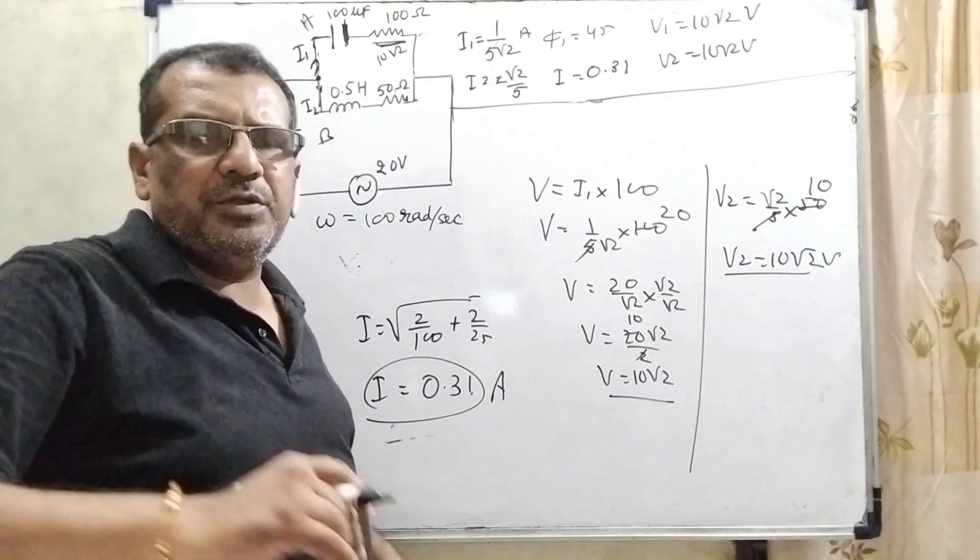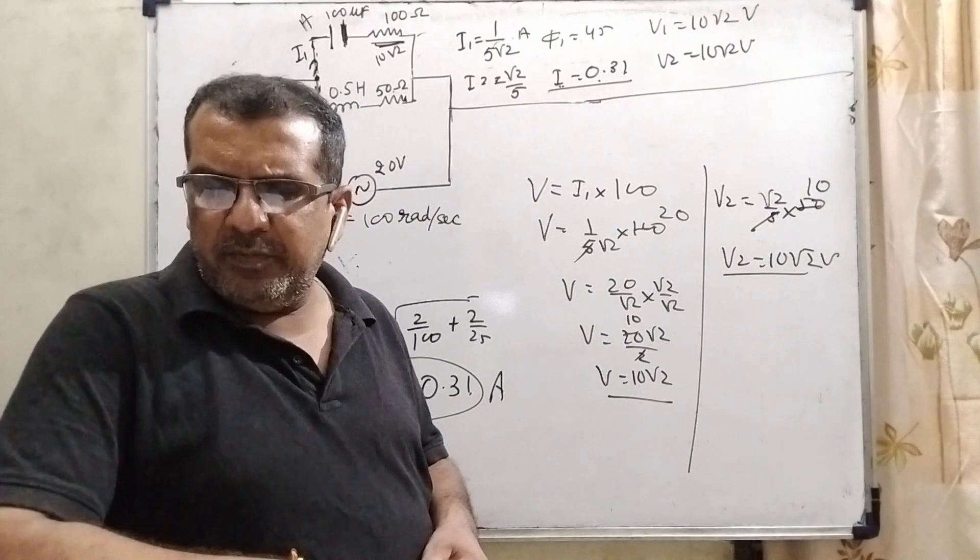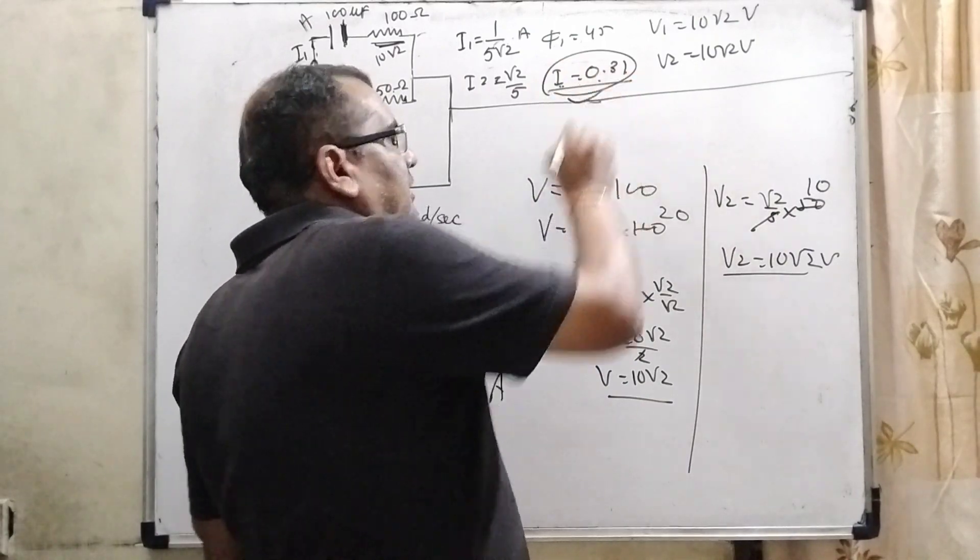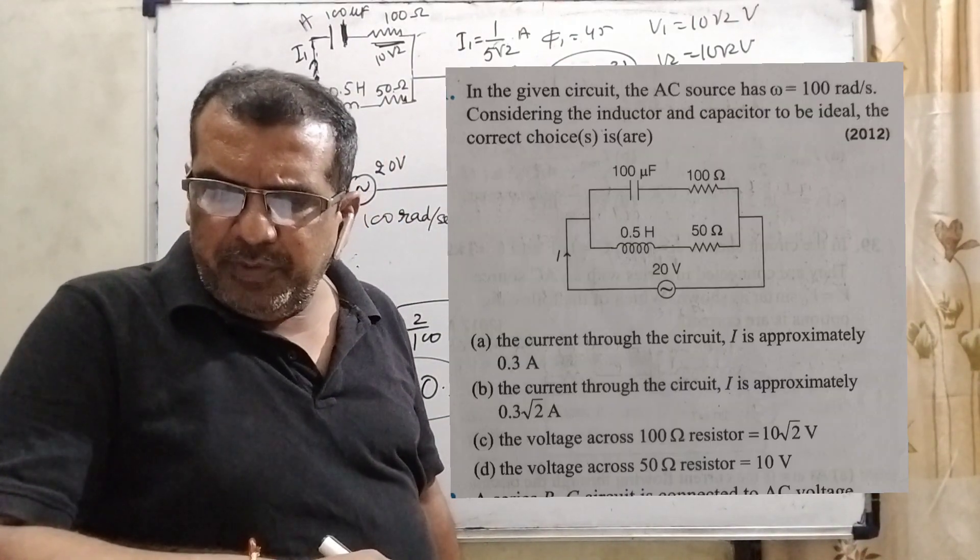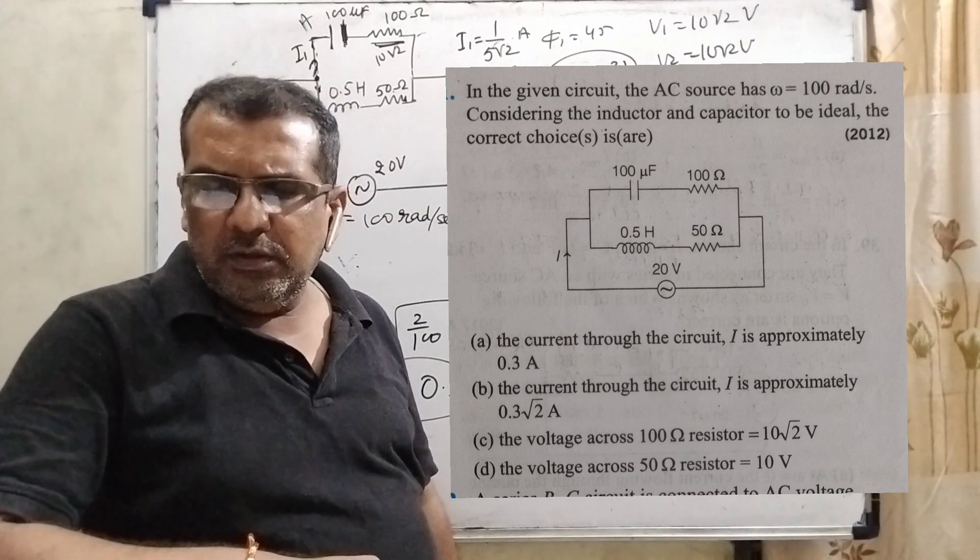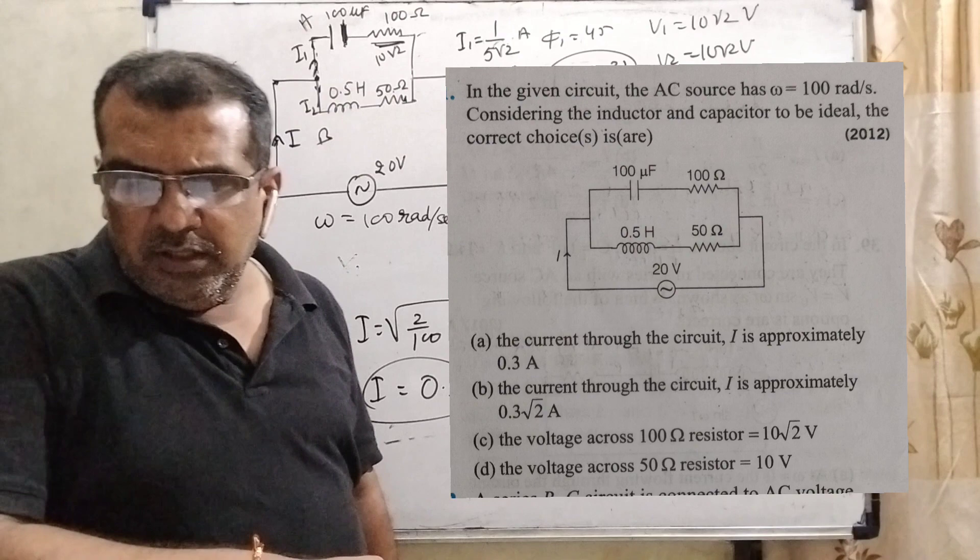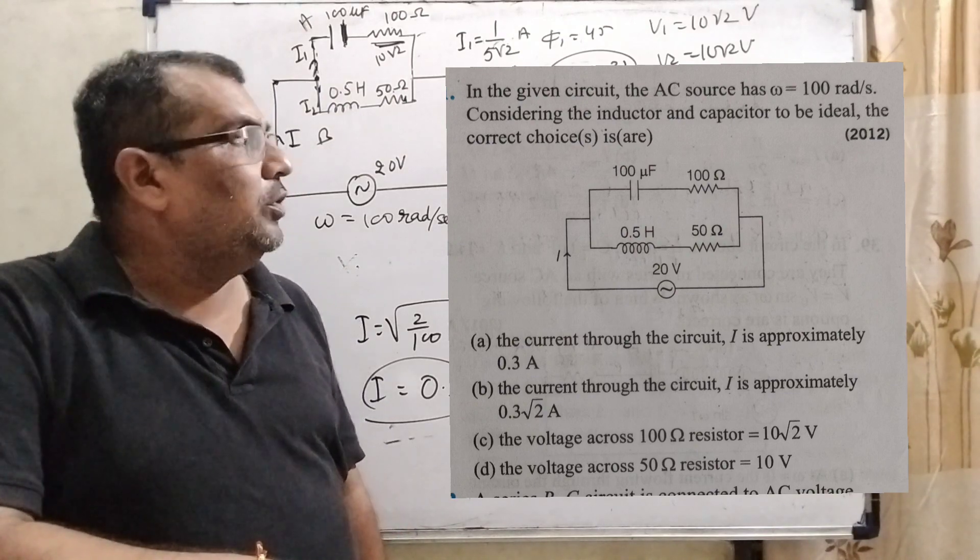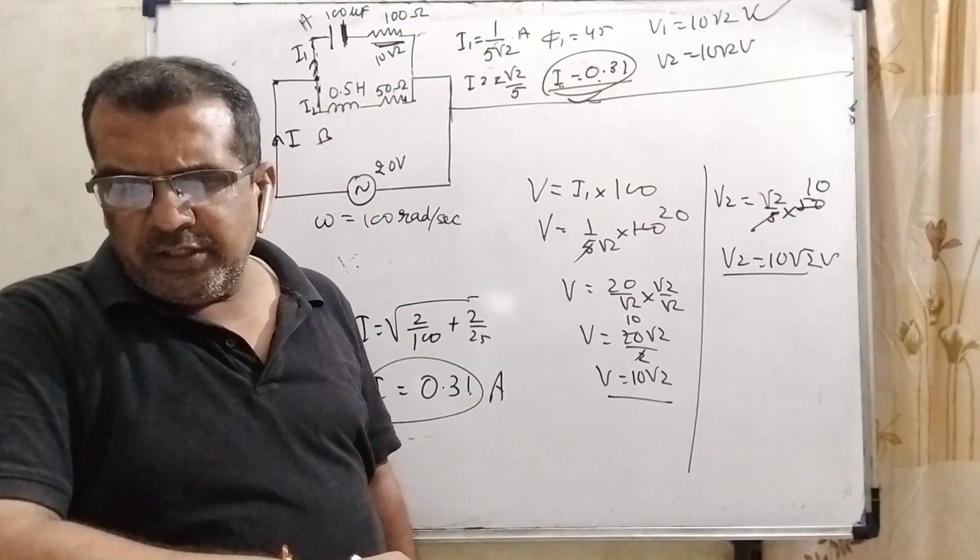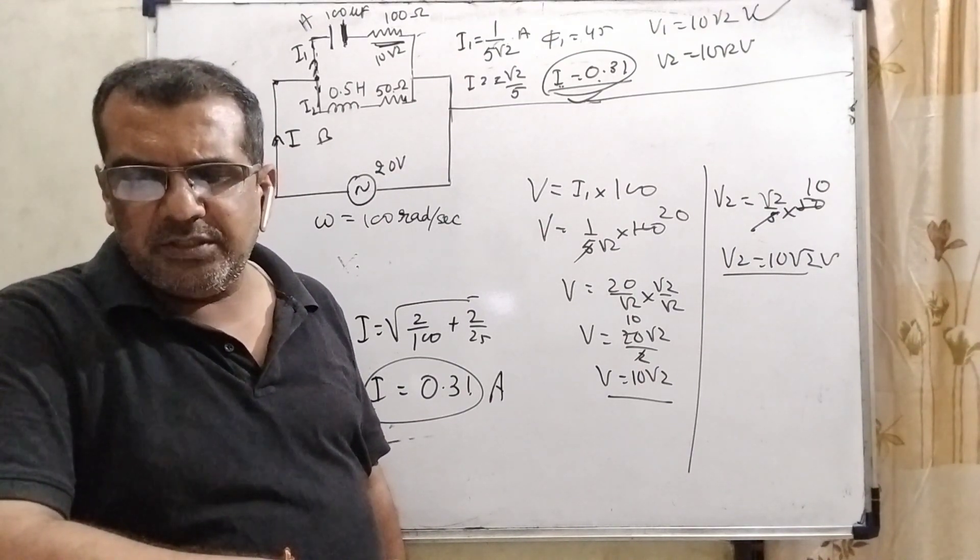Now, let us see which options are correct. In the option, the current through the circuit I is approximately 0.3 ampere. Yes, I equal to 0.31 ampere. It is correct. So first option is also correct. And option B, the current through I is approximately 0.3 root 2 ampere. It is wrong. Option C, the voltage across 100 ohm resistance, the potential is 10 root 2 volt. Yes, it is 10 root 2 volt. It is also correct. And option D, the voltage across 50 ohm resistance 10 volt. That is wrong. So therefore the correct options are A and C.